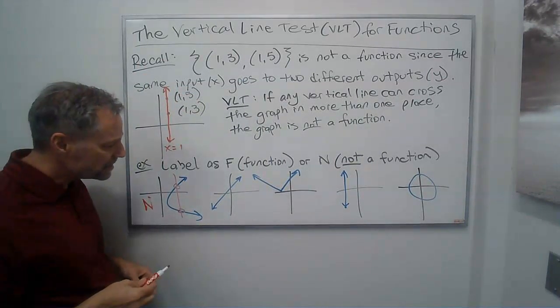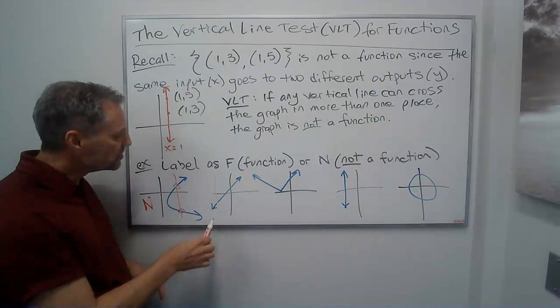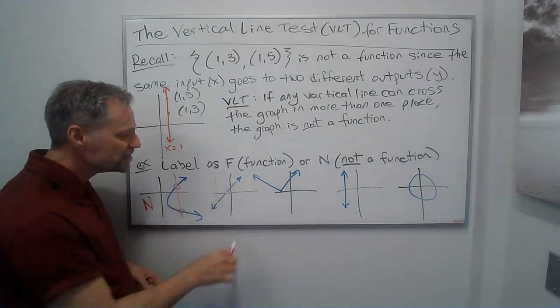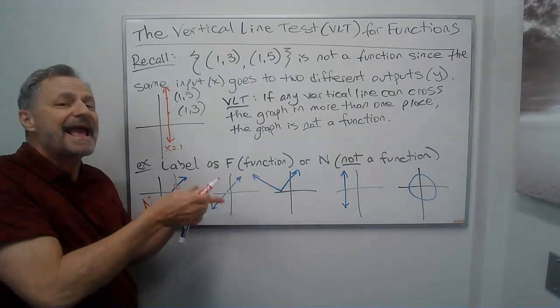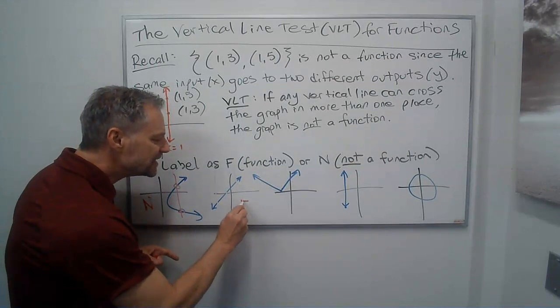Now let's go to the next one. This time I cannot. Any vertical line I draw crosses only once. I can't find a vertical line that crosses more than once. So this is a function.